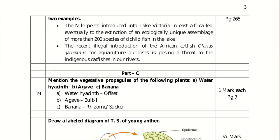Part C is for three-mark questions — you have to answer any five from eight options. Mention the vegetative propagules of the following plants: Water hyacinth — offset; Agave — bulbil; Banana — rhizome.